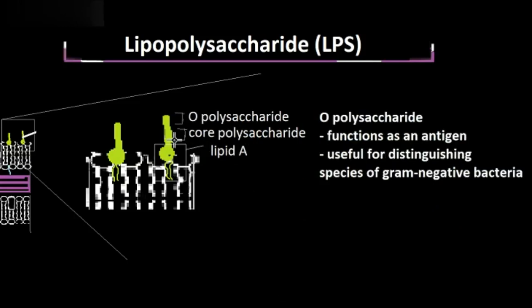Extending out from the core polysaccharide is the O polysaccharide, which serves as an antigen and is useful for distinguishing the species of gram-negative bacteria. An antigen is any molecule or substance that is foreign to the human body, and thus will elicit an immune response.